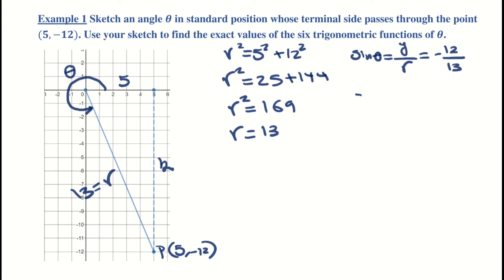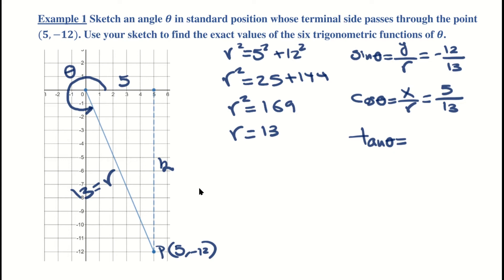Cosine of theta equals x over r, which is 5 over 13. The tangent of theta equals y over x, which is -12 over 5.